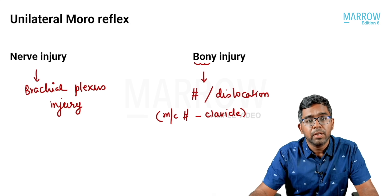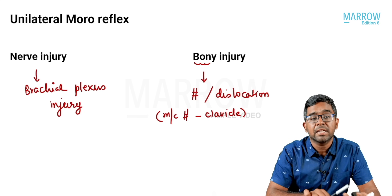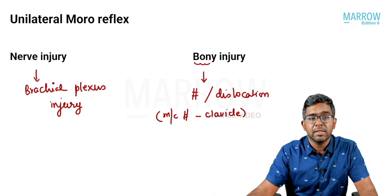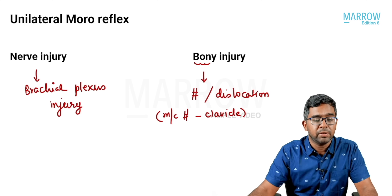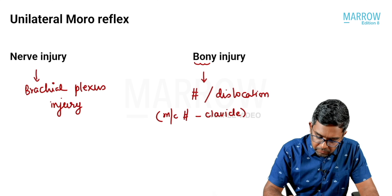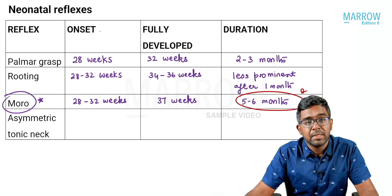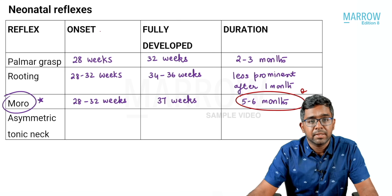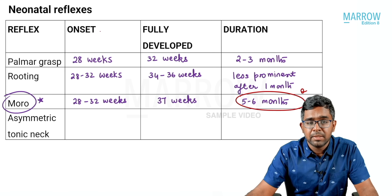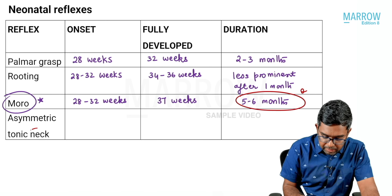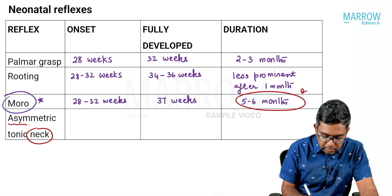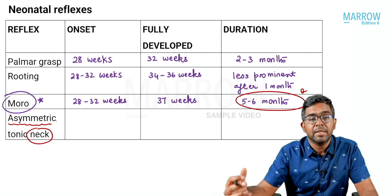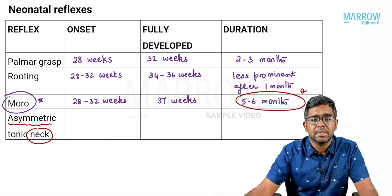So those are the key points about the Moro reflex — both what is normal and the abnormalities — which is one of the most commonly asked exam questions in the section of neonatal reflexes. We move on to one more reflex: the asymmetric tonic neck reflex. As the name suggests, it is elicited by turning the neck, and there is asymmetry of response.